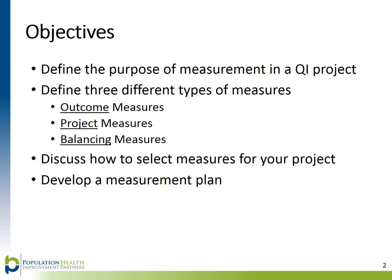By the end of this module, learners will be able to define the purpose of measurement in a QI project; define and describe three types of measures — outcome measures, process measures, and balancing measures — and when and how to use them; understand each type and how to select the most appropriate measures for your specific project; and develop a measurement plan to monitor your project going forward.